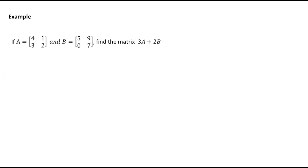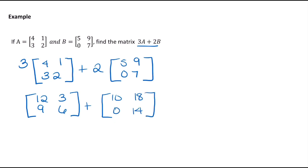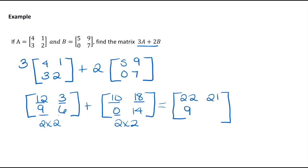Now let's find 3A plus 2B. This connects everything. We do 3 times [4, 1, 3, 2] plus 2 times [5, 9, 0, 7]. Remember PEMDAS — multiply before adding. Multiplying by 3: 12, 3, 9, 6. Multiplying by 2: 10, 18, 0, 14. Since both are 2 by 2 matrices, we add corresponding elements: 12 plus 10 is 22, 3 plus 18 is 21, 9 plus 0 is 9, and 6 plus 14 is 20.